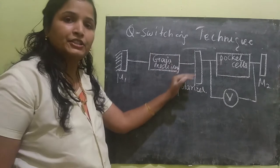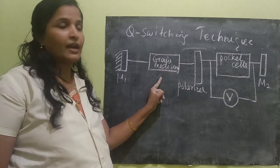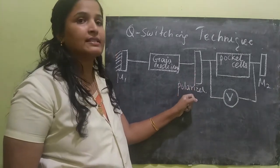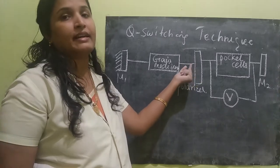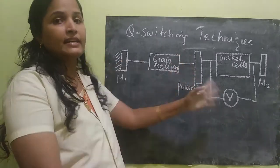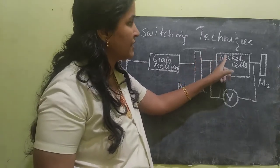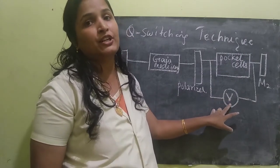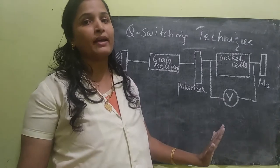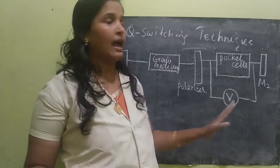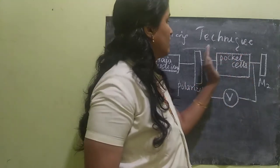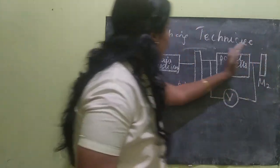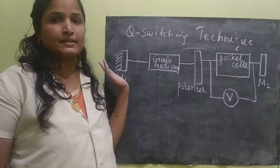The radiation will come out of the gain medium and travel to the polarizer. The purpose of the polarizer is to linearly polarize the radiation, so all the radiation will now be linearly polarized. The voltage supply source is initially zero, meaning there is no supply to the Pockels cell. At this moment, nothing will happen — the linearly polarized radiation will hit mirror M2, and because of the total reflection, everything will come back and the process repeats.